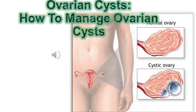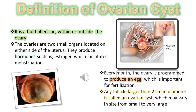Ovarian cysts: how to manage ovarian cysts. An ovarian cyst is a fluid-filled sac within or outside the ovary. The ovaries are two small organs located on either side of the uterus; they produce hormones such as estrogen, which facilitates menstruation. Every month the ovary produces an egg important for fertilization. Any follicle larger than two centimeters in diameter is called an ovarian cyst, which may vary in size from small to very large.